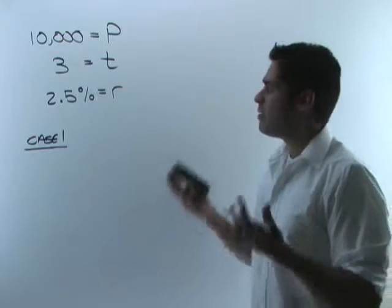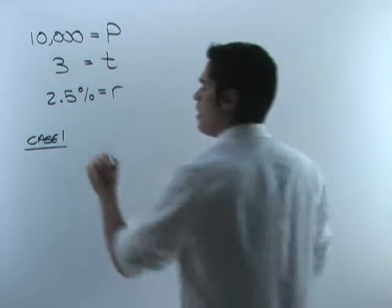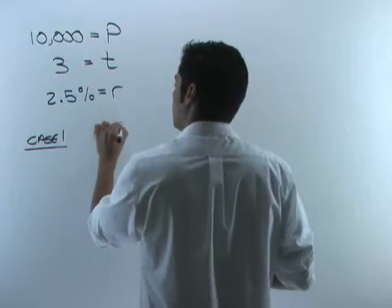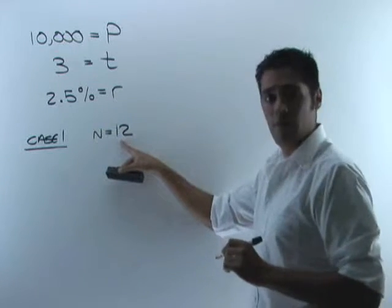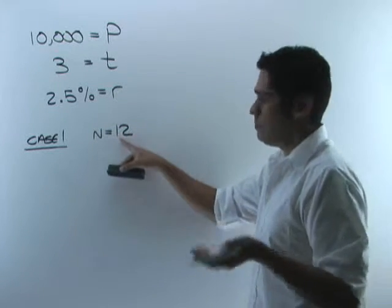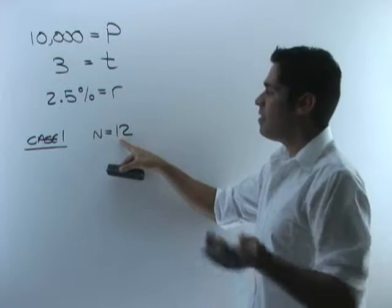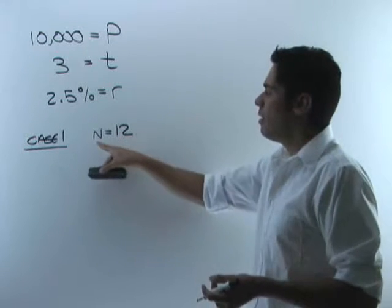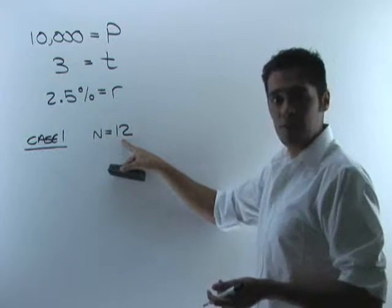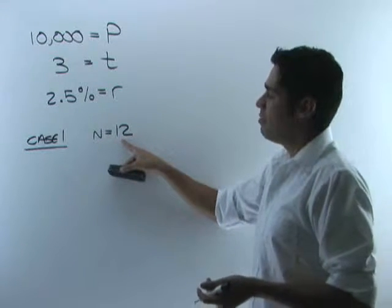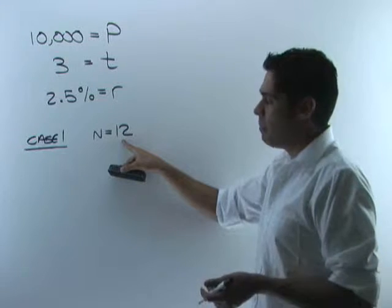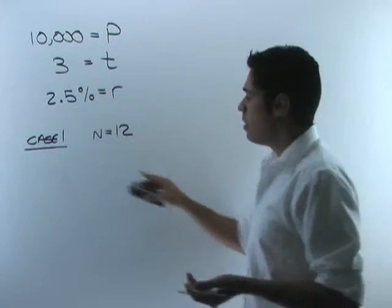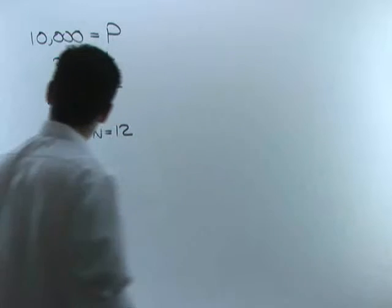In case one, let's say the interest is compounded monthly. If interest is compounded monthly, then n equals 12 because there are 12 months in a year. If they said compounded daily, you'd let n equal 365. If compounded quarterly, n equals 4. For our first case, we'll use monthly compounding, so n equals 12.